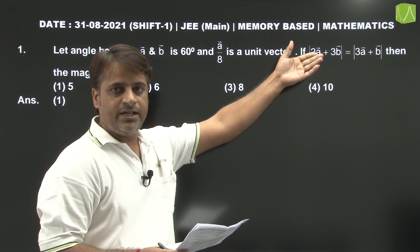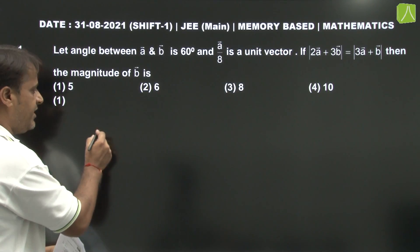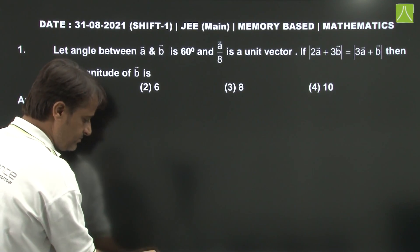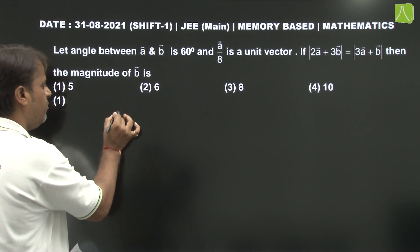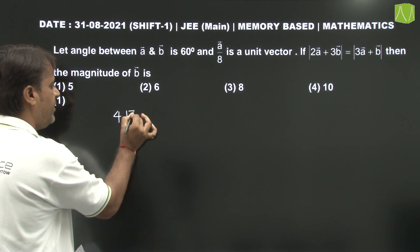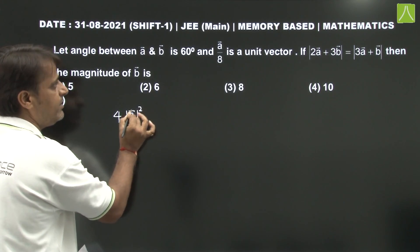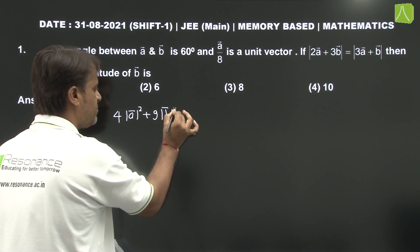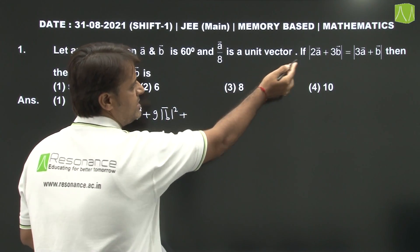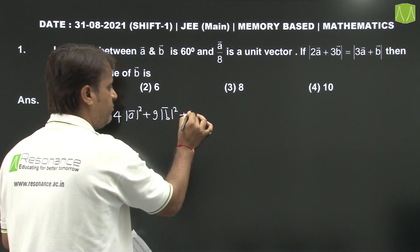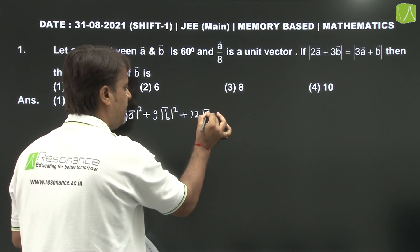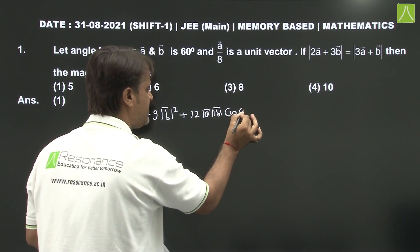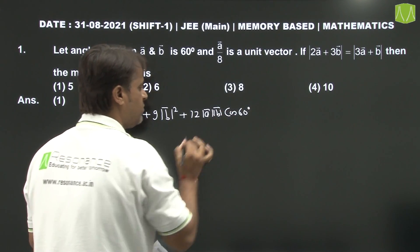Given condition, we will start squaring both sides. On the left side: 4 mod of A vector squared plus 9 mod of B vector squared plus 12 A dot B. So, 12 mod of A vector times mod of B vector, angle between vector A and vector B is 60 degrees, so cos 60 degrees.